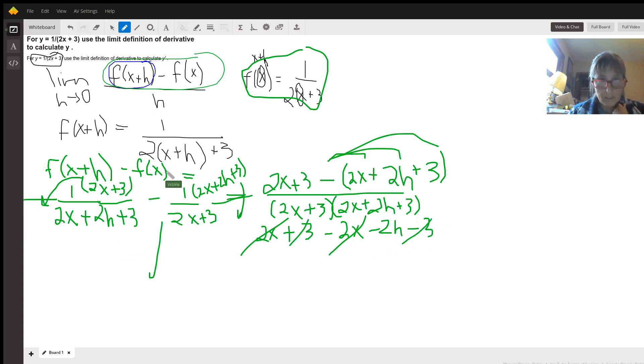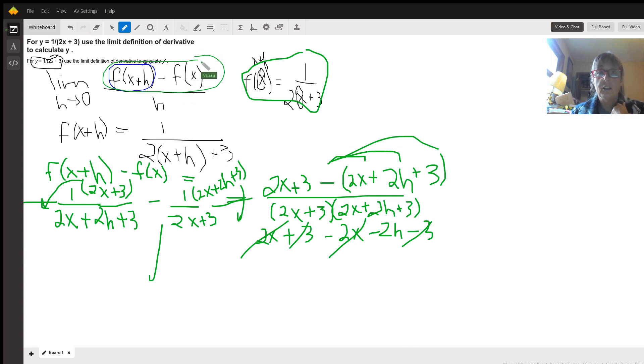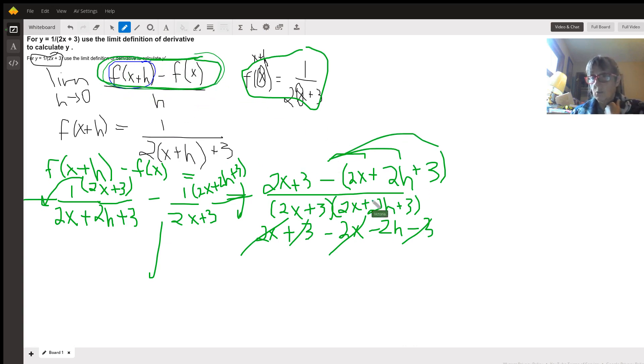And so in the end, my simplified version of f of x plus h minus f of x. When I simplify this, it just becomes what's left minus 2h over our common denominator, 2x plus 3 times 2x plus 2h plus 3.